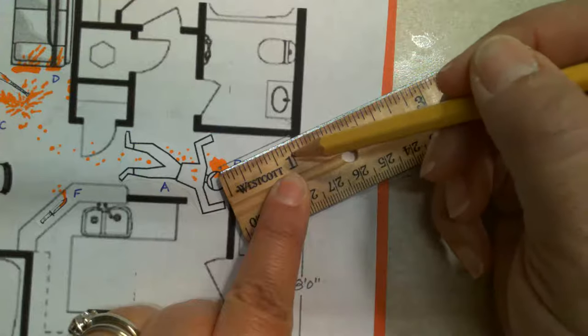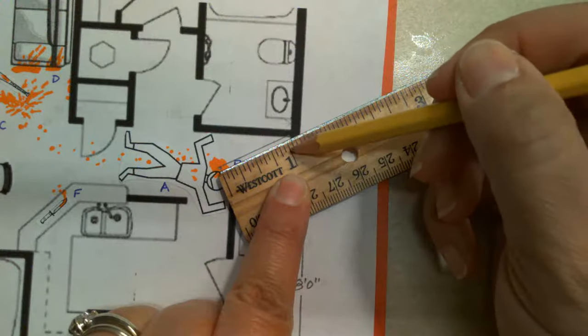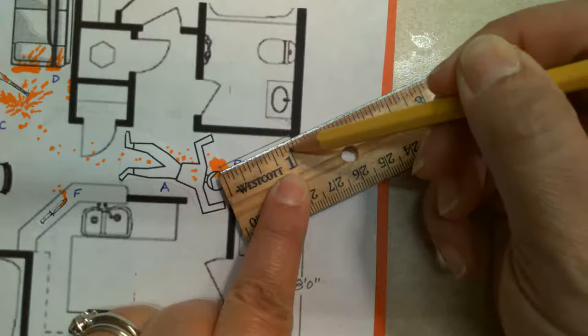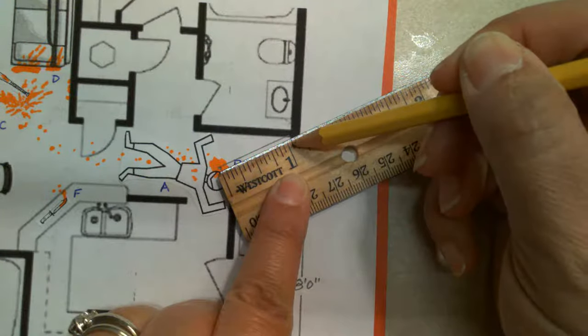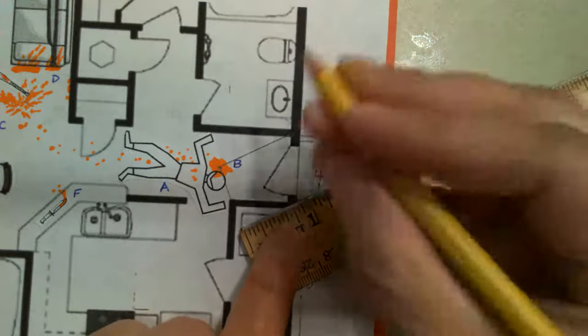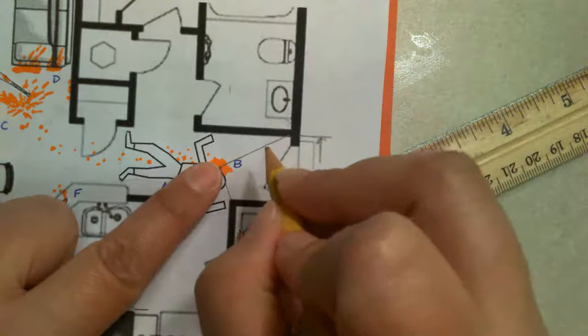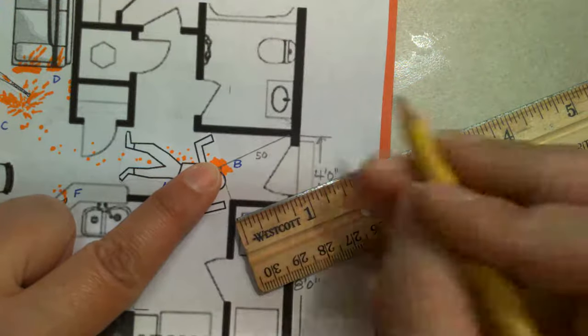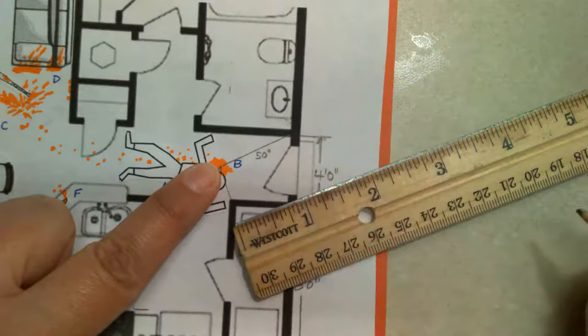When you're doing your measurements, you want to use just inches. So four feet would be 48 inches because four times 12 is 48. It is a little bit past that. So I could say 49 or 50 inches. So I'll just say 50 inches. And I want to put my 50 next to the line. It doesn't matter if it's top or bottom. It just needs to be next to the line.